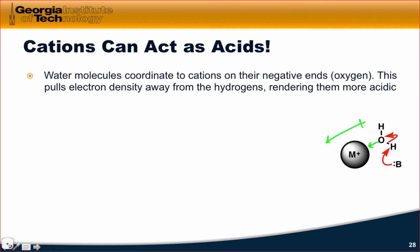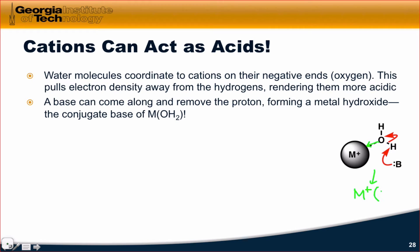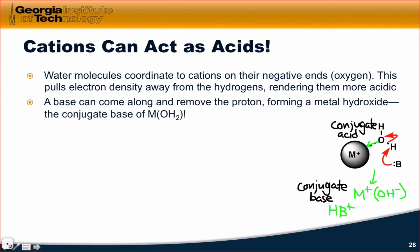A base can then come along and remove one of the protons of water, which is rendered more acidic through this coordination mechanism. The resulting product is a metal hydroxide, M⁺ and OH⁻, and a proton has coordinated to the base, forming HB⁺. We can think of M⁺OH⁻ as the conjugate base of the M⁺·OH₂ complex we started with. The more basic the metal hydroxide is, the less acidic the conjugate acid — the M⁺·H₂O complex.